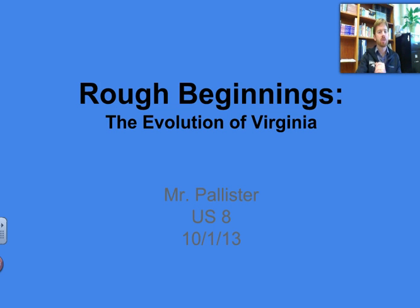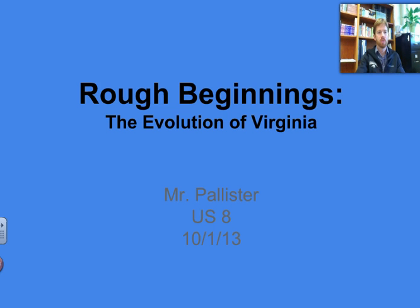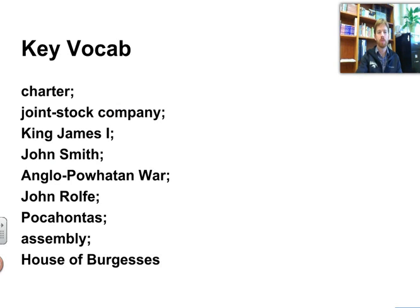You'll see a title slide in the beginning. This one's called Rough Beginnings: Evolution of Virginia. So we're going to look at how Virginia started out. We've kind of already talked about the tough times in Jamestown, but we'll take Cornell notes today on that and see how it grew into a more prosperous colony. You'll always see key vocabulary terms at the beginning of one of these. These are things you will need to know for a test — not only what they are, but why they're important, why we mentioned them.